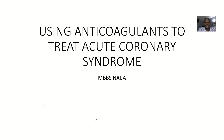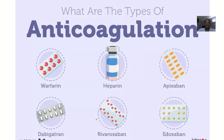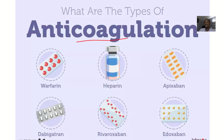We are looking at how we can use anticoagulants to treat acute coronary syndrome. An anticoagulant is a drug that is against coagulation — that is, it is against your blood forming clots.